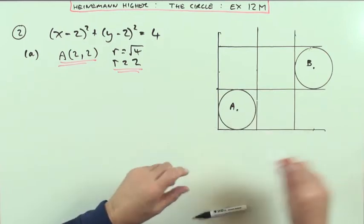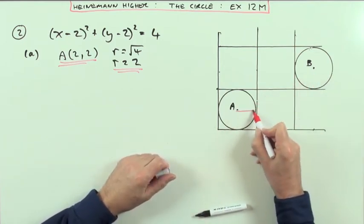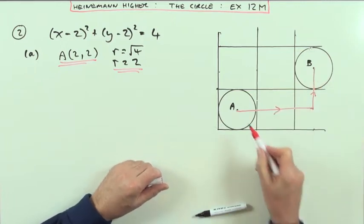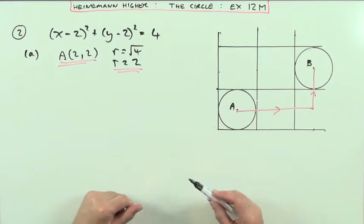How do I get from A to B? I would go along a certain amount and up a certain amount. There's a translation that will take me from A to B, and I know the dimensions of that translation because I know the radius.